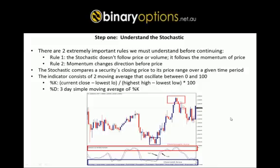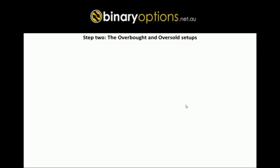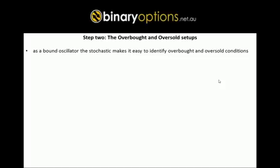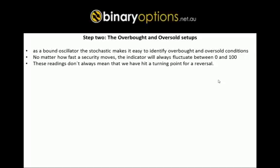The stochastic oscillator is very useful in ranging markets. The first setup we are going to use is the overbought and oversold setup. As a bound oscillator, the stochastic makes it easy to identify overbought and oversold conditions. No matter how fast the security moves and no matter how long the trend is, the indicator will always fluctuate between 0 and 100. In a ranging market, an overbought reading is the top of the range and an oversold reading is the bottom of the range.